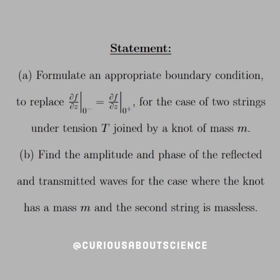While we're still here on the construction framework, let's go ahead and formulate an appropriate boundary condition to replace the partial derivative of F of Z at 0 to the left equals partial F of Z evaluated at 0 to the right, for the case of two strings under tension T joined by a knot of mass M.